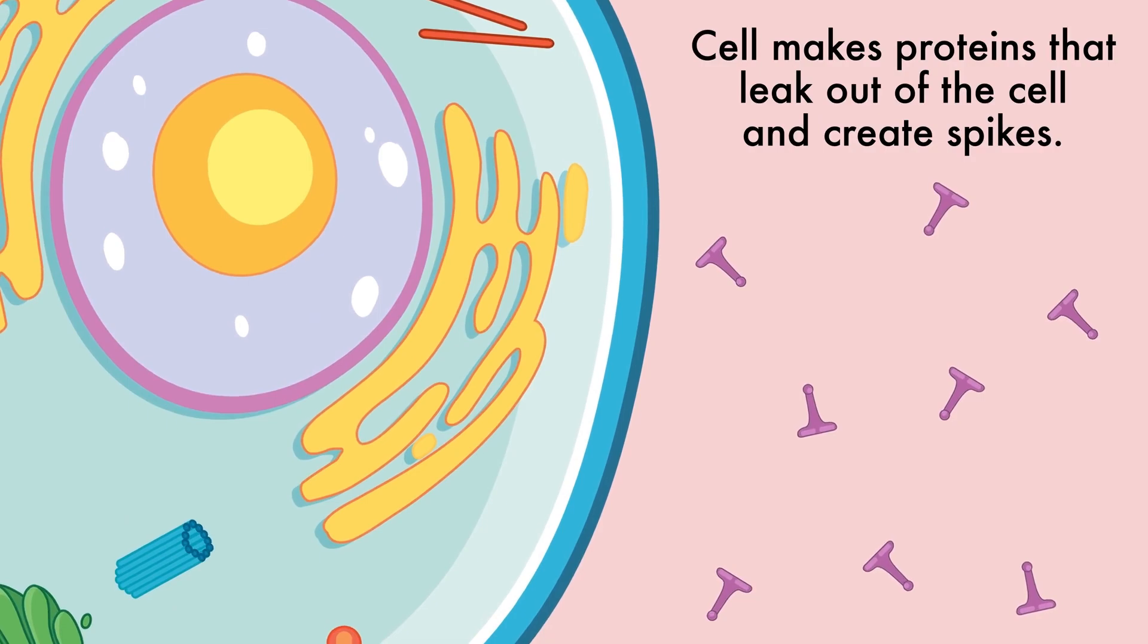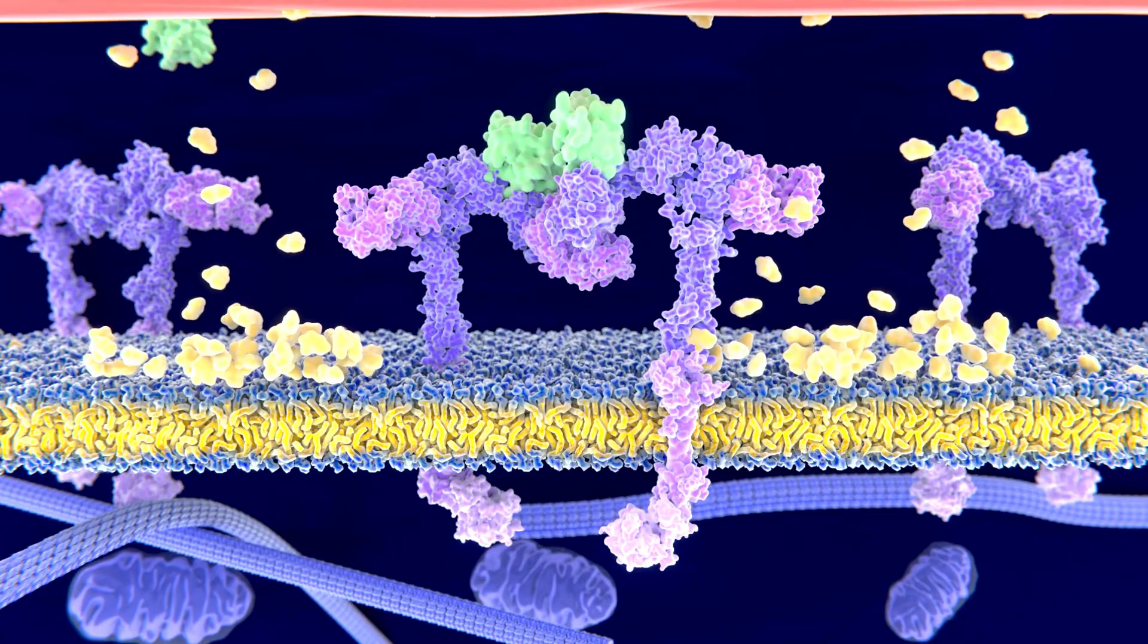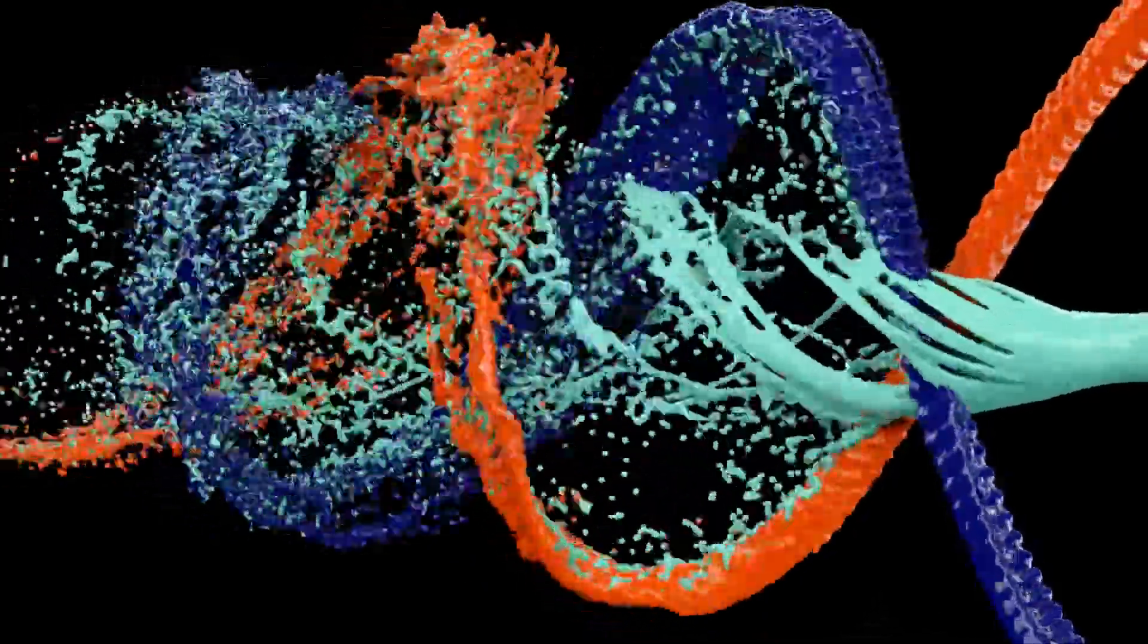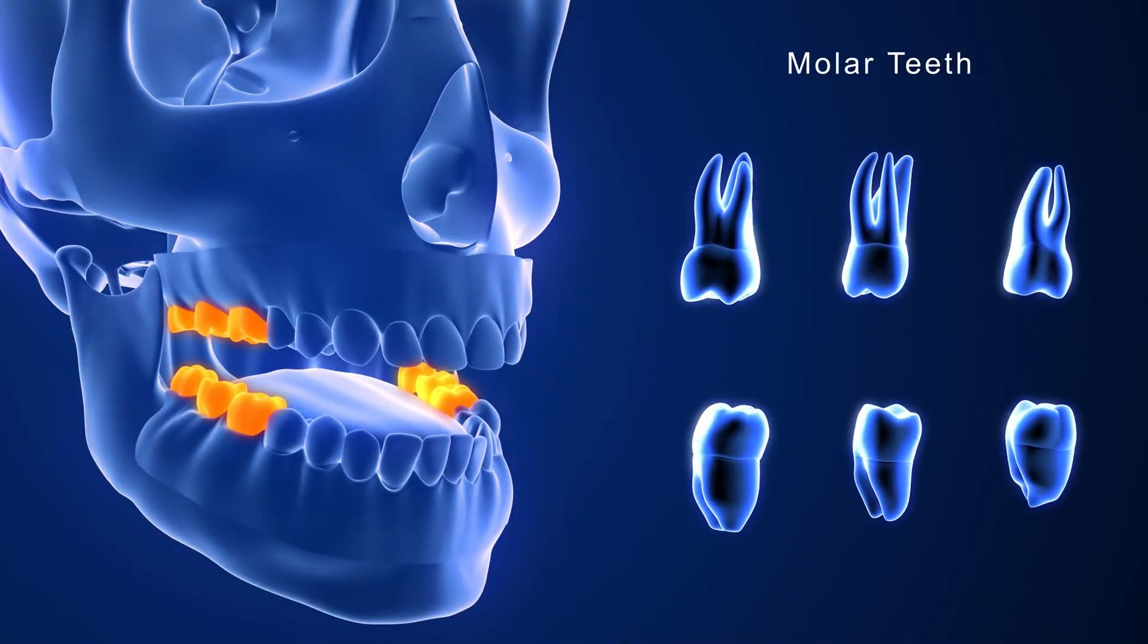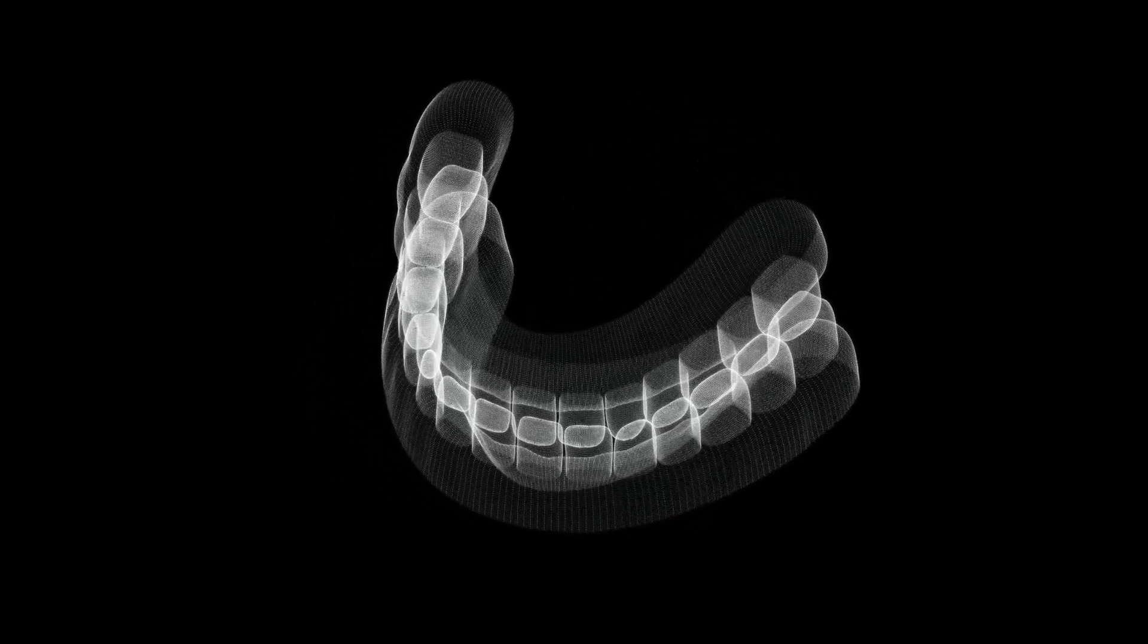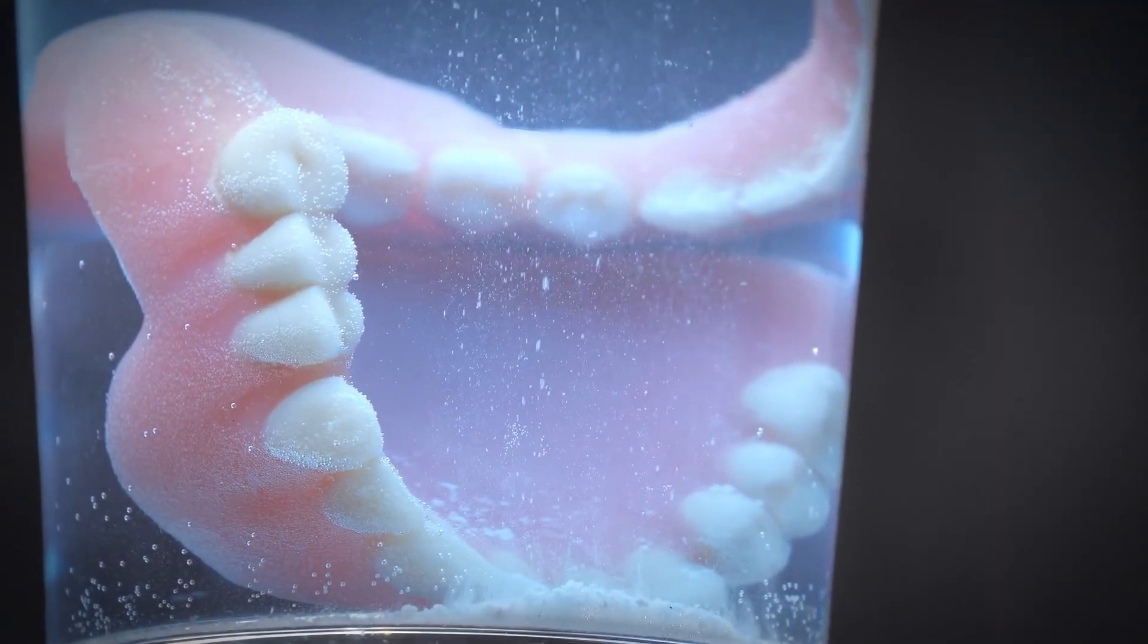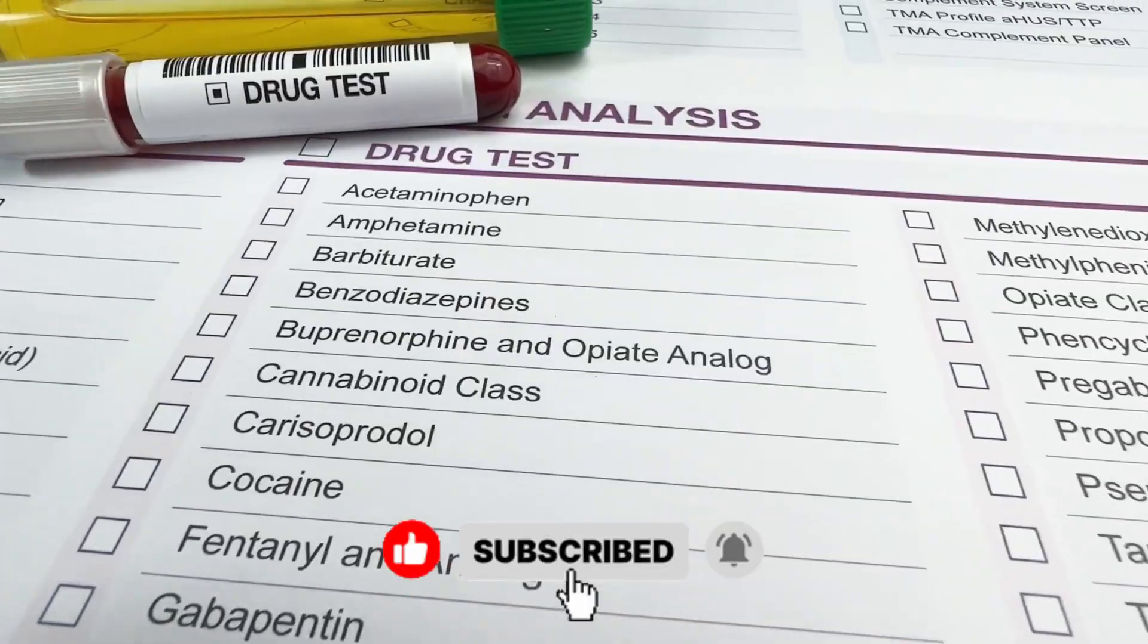The drug, the anti-USAG1 antibody, works by neutralizing or blocking the USAG1 protein. By binding to USAG1, the antibody prevents it from sending the stop signal. When this inhibitor is removed, it frees up other growth-promoting proteins like bone morphogenetic proteins (BMPs) to get back to work. The removal of the USAG1 block essentially flips the switch, reactivating those dormant tooth buds and initiating the biological process of growing a new natural tooth from the patient's own tissue.